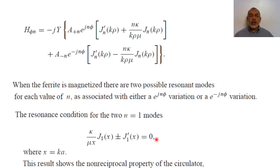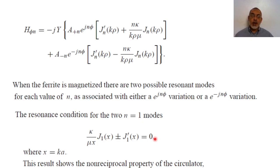For the case of unmagnetized ferrite, the value of kappa is zero, so the resonant condition in both cases reduces to J'_1(x) = 0, which we already obtained in the previous video. We now have two conditions where x = k * a and a is the radius of the ferrite disk.